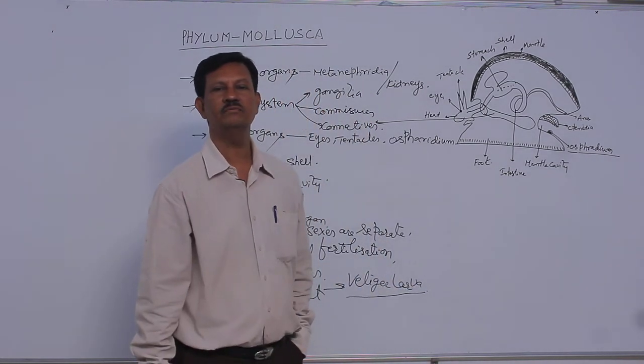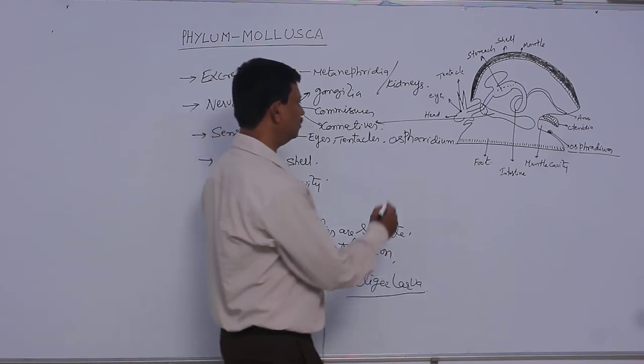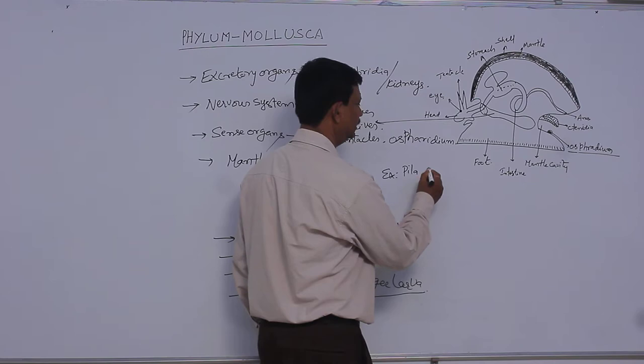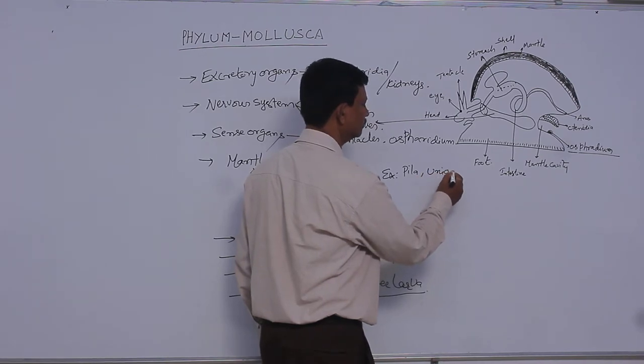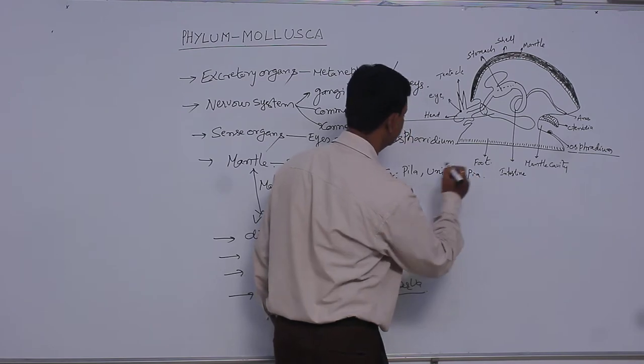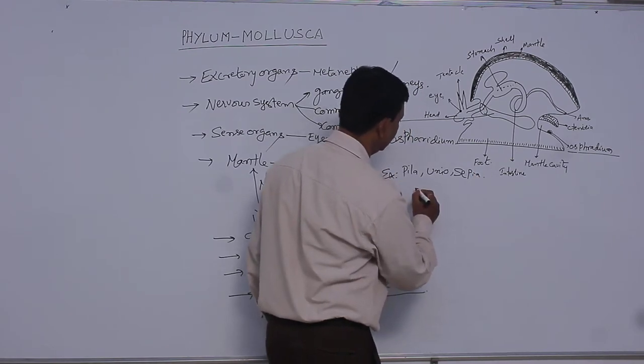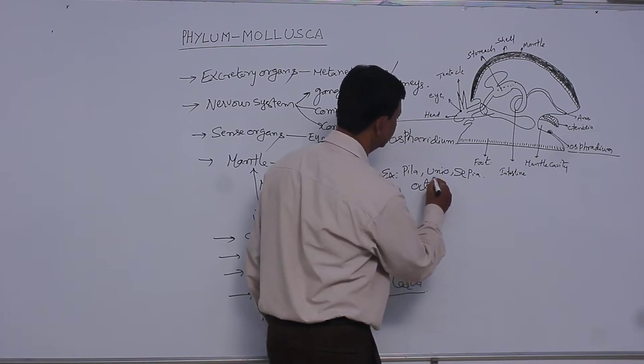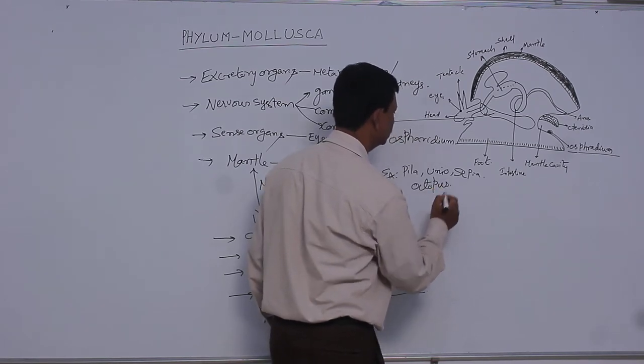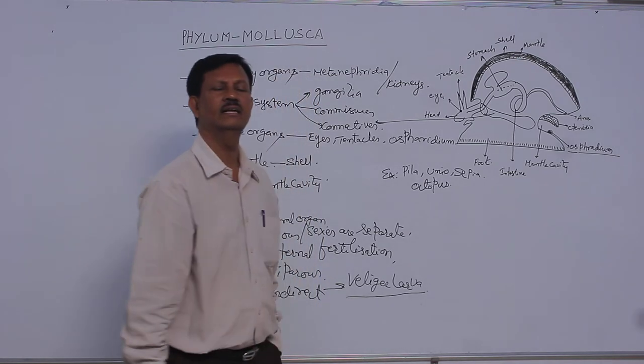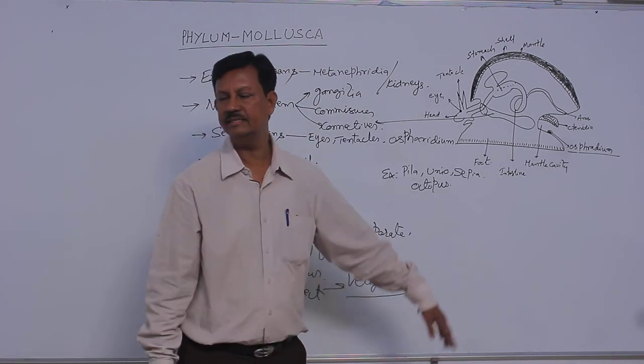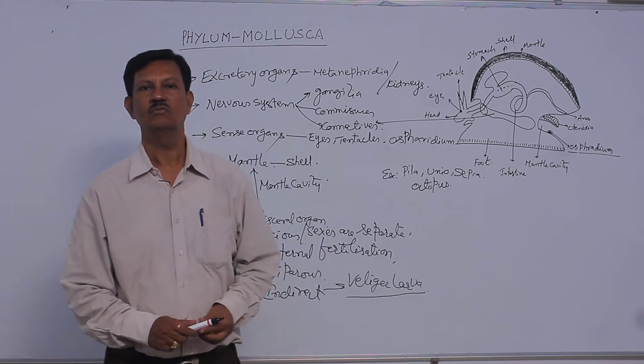The examples are pyla, unio, sepia, and octopus. There are so many other animals also included in the phylum. These are the main general characters of the phylum mollusca.